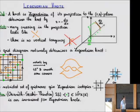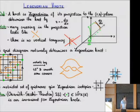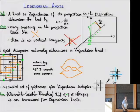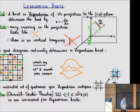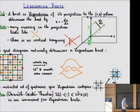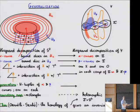For Legendrian knots you only want to consider isotopies through other Legendrian knots, which gives a restricted set of isotopies. This can be completely understood in terms of grid moves: you just use a restricted set of grid moves. This gives you the ability to define an invariant as the upper-right corners of the X's, and that invariant is invariant under these restricted grid moves.